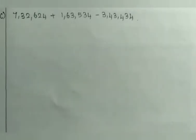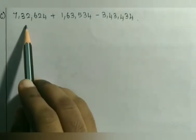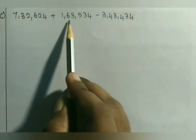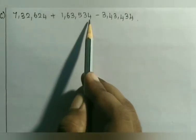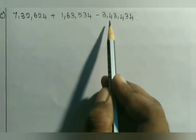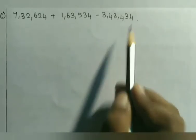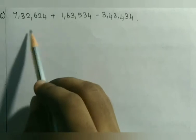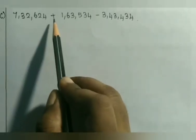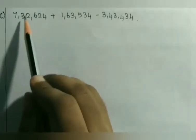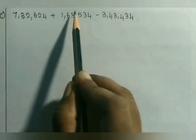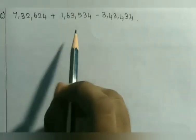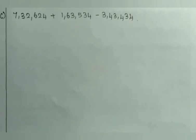Last sum: 7,32,624 plus 1,63,534 minus 3,43,434. Which are the addends? The addends will have a plus sign. So 7,32,624 is the first addend and 1,63,534 is the second addend. Let us write these two numbers in columns first.